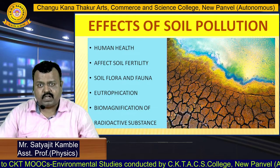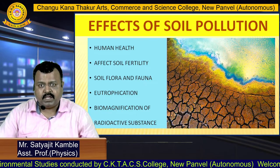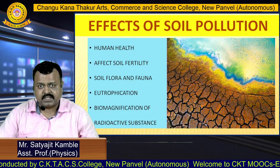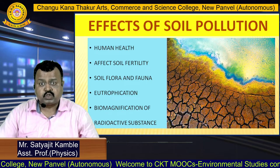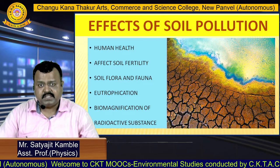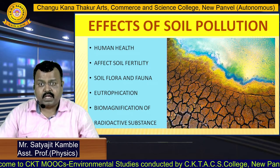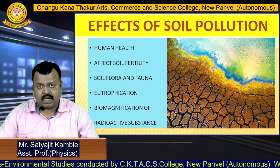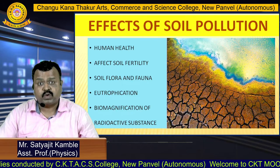Soil pollution will also lead to eutrophication. Sometimes the chemicals which are added to the soil — for example, fertilizers and pesticides — get washed away with rain and may join a nearby water stream. That nearby water stream may get overfilled with these chemicals, and these chemicals act as a source of nutrition for algae.